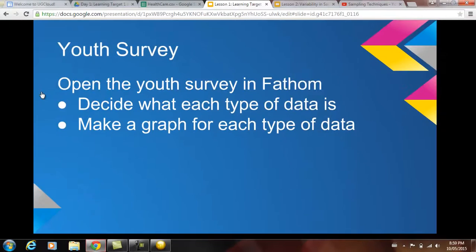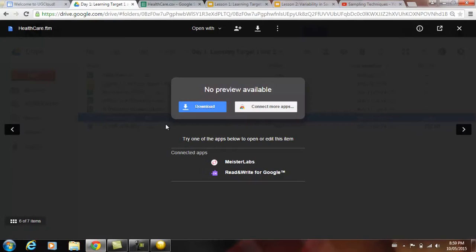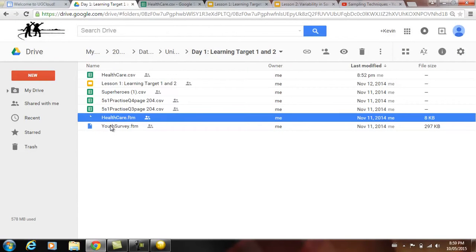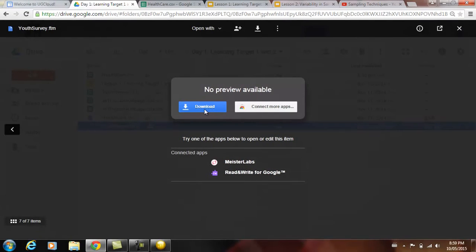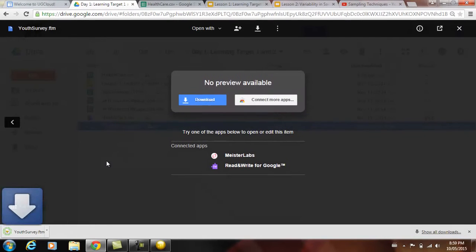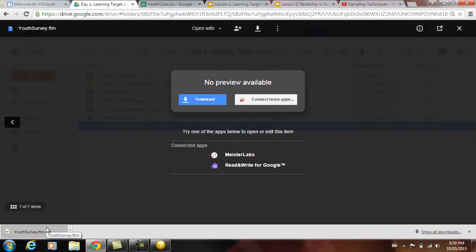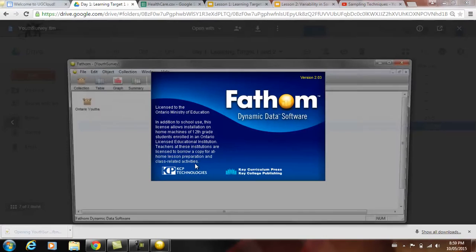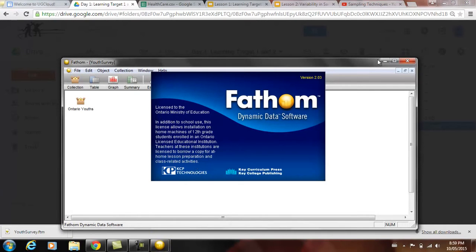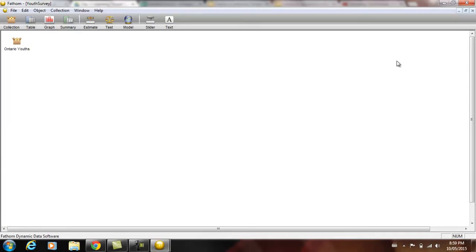So I want to look at another file from Fathom that we can play with. This is the Ontario use survey, given out every year. The textbook talks a little bit more about it. And so if we look at the data collection we can bring in the table.